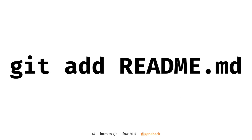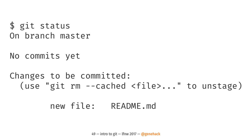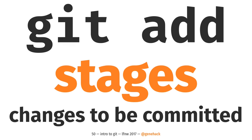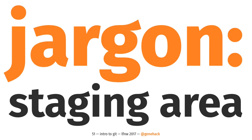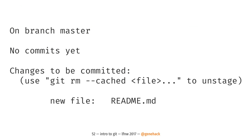So let's do that — 'git add readme.md.' Then we'll run 'git status' again. Now git status tells us there's a change that we're going to be committed — it's a new file and this is what it's called. Git add stages changes to be committed. This will tell you: git add stages changes to be committed. Staging, or the staging area, is another piece of Git jargon we need to break down.